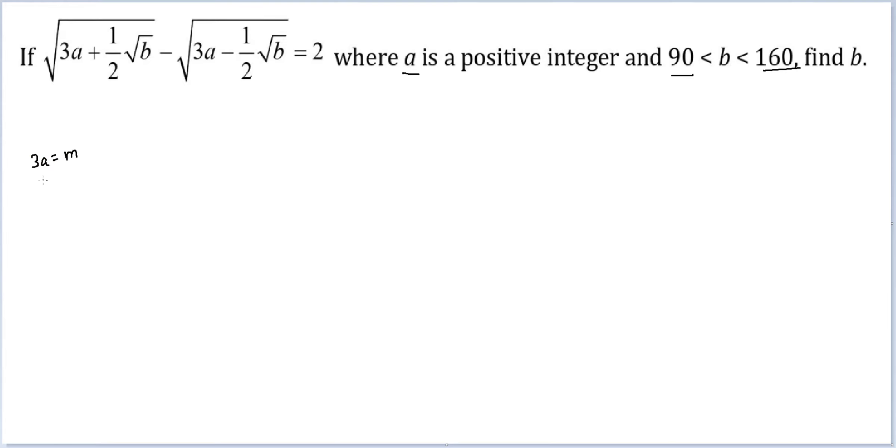First thing I'm doing is taking 3a to be equal to m and half root b to be equal to n. So effectively what I have is √(m + n) - √(m - n) = 2.